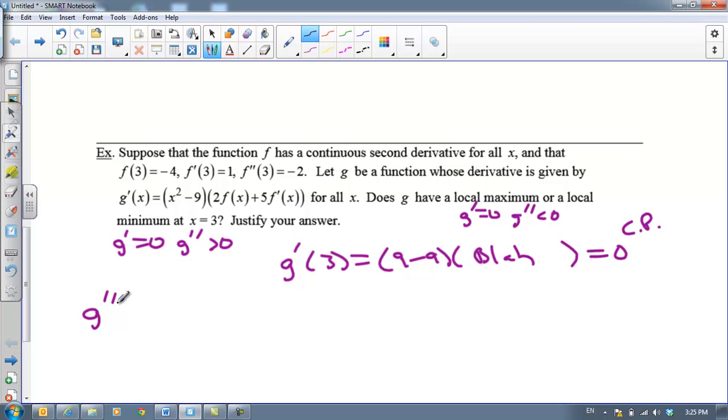Let's find G double prime and see what happens there. G double prime of X, I'm going to find G double prime of the letter before I plug in three. I'm going to have to use the product rule. That's going to be the first function times the derivative of the second. The derivative of the second would be two F prime of X plus five F double prime of X plus the second times the derivative of the first.